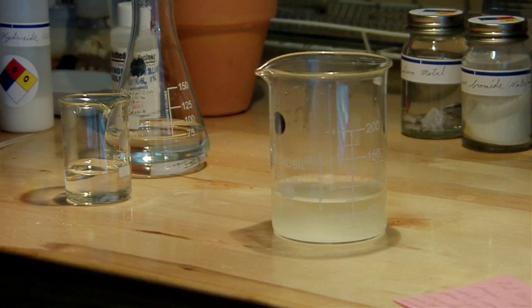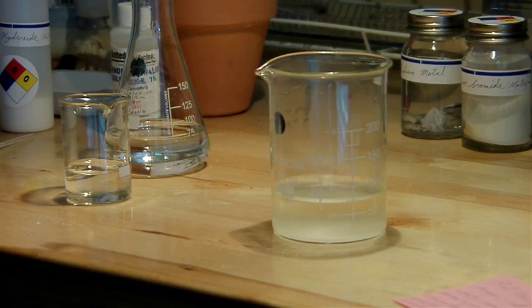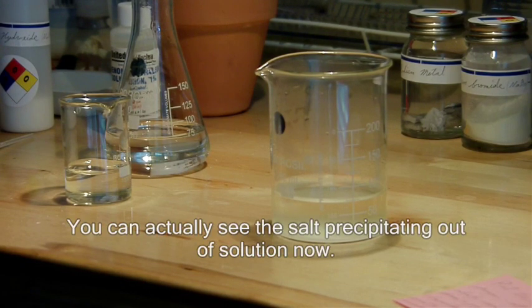So the reaction that's happening here is hydrochloric acid plus sodium hydroxide is going to yield sodium chloride, regular table salt, and water. So if I do this correctly and everything cancels out exactly, I should just end up with a beaker full of salt water.